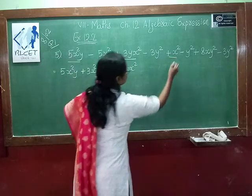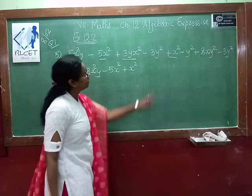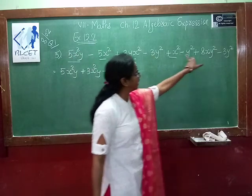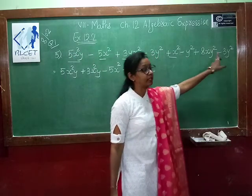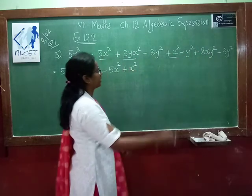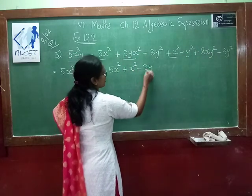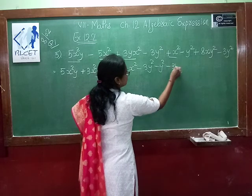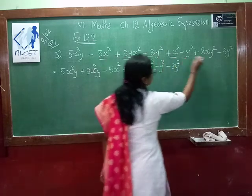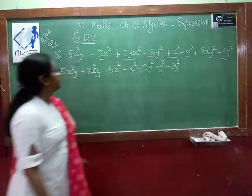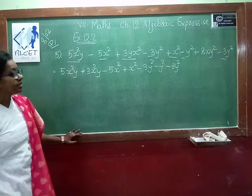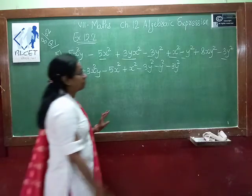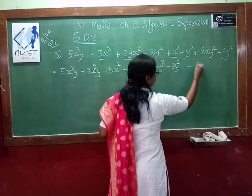So that is done. Then minus 3y² minus y² and again minus 3y² — these three are like terms, so we write minus 3y² minus y² minus 3y² together. Now what is left? Plus 8xy². We don't have any other terms, so this term we write as it is.